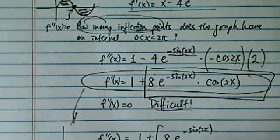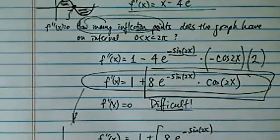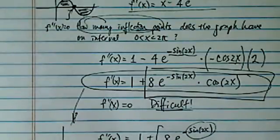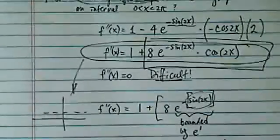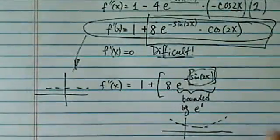Now if you notice, this chunk is bounded by e^1, because e to the minus function is decaying or going up, depending on what this is. However, sin(x) is bounded by plus or minus one.